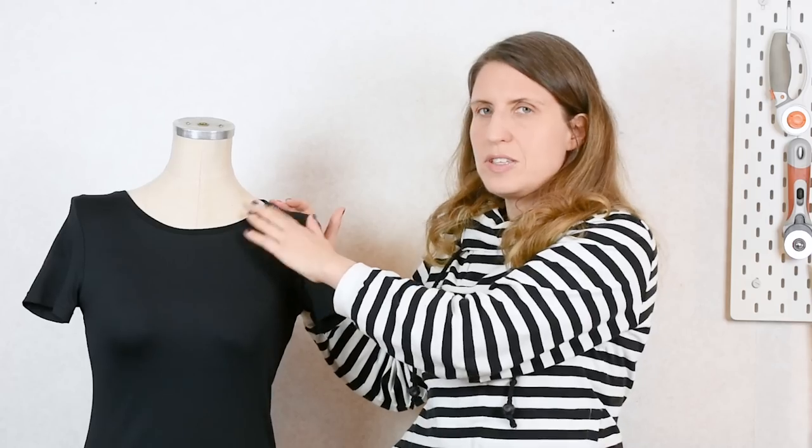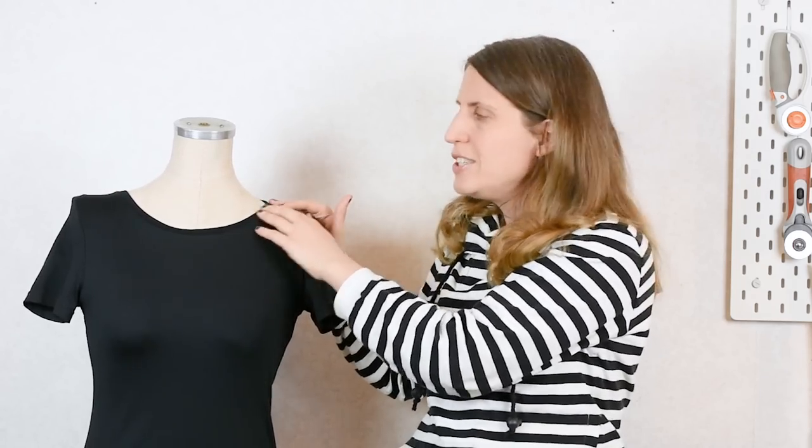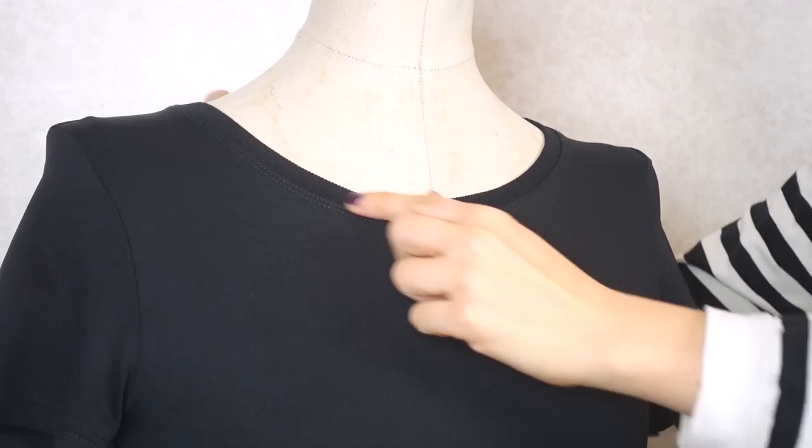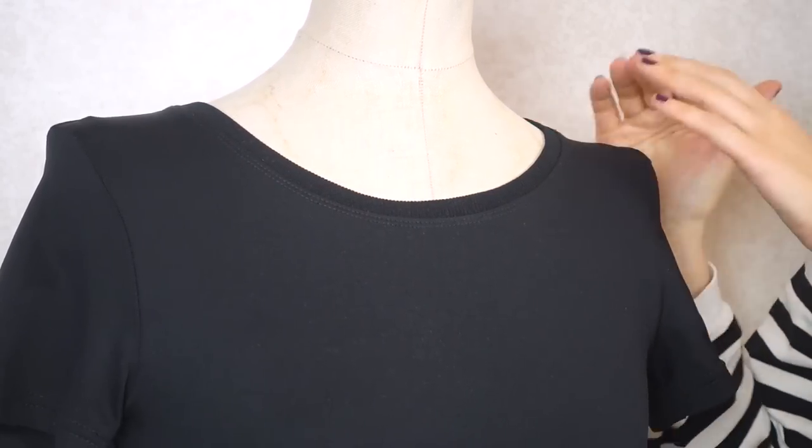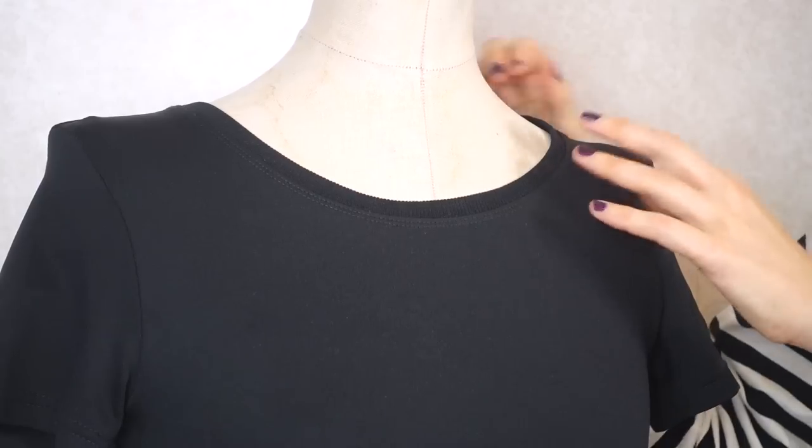Another challenge when attaching ribbing on knit tops is to make sure that the negative ease is distributed evenly across the entire neckline. As I said, ribbing will always be shorter than the neckline, which means you need to stretch out the ribbing when you're attaching the neckline. There are several different ways of doing it. One common way is to divide the entire circumference in four exactly the same length, and then you do the ribbing in four exactly the same length.